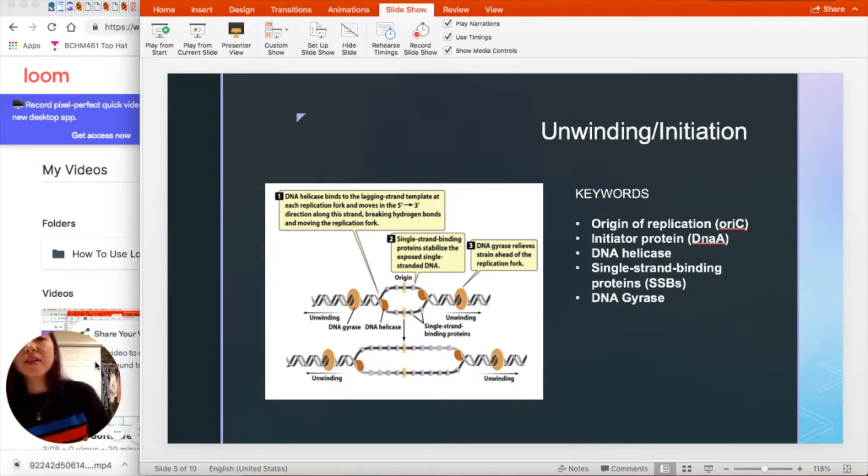And I wanted to mainly talk about initiation and elongation. So key terms to know would be origin of replication, initiator protein, DNA helicase, single strand binding proteins, as well as DNA gyrase.